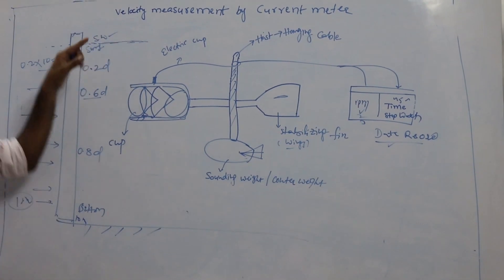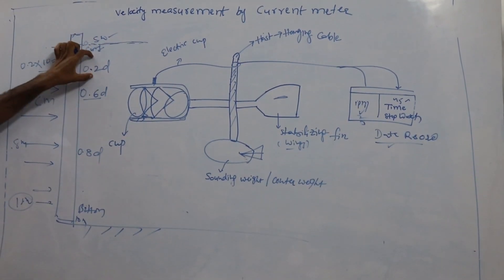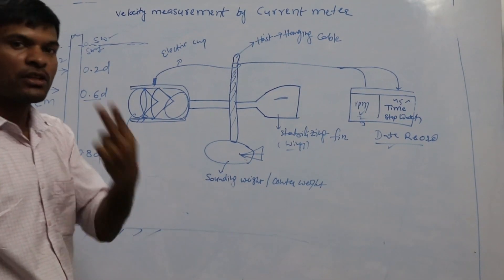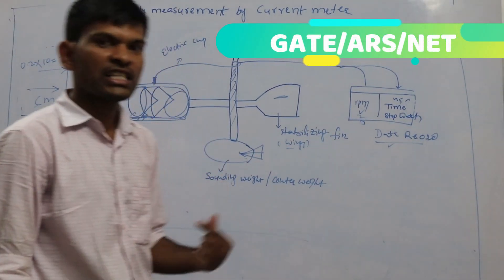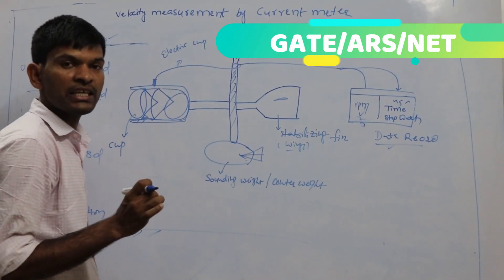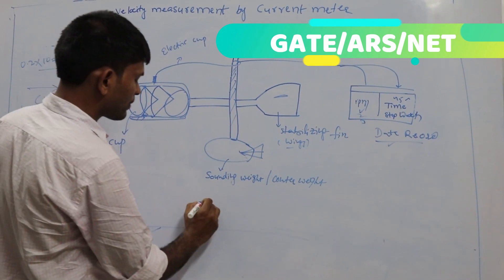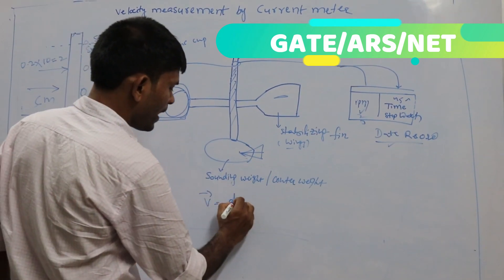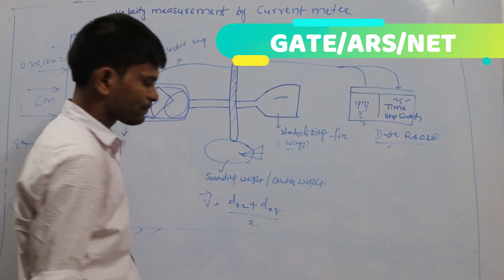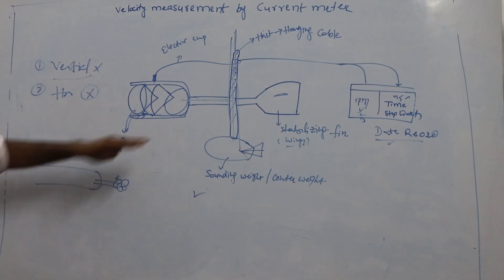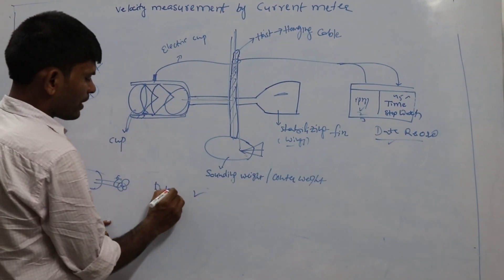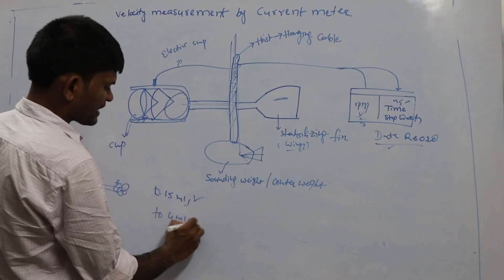This is the measurement of velocity with respect to position. For a shallow stream, we measure at only a single point. For a medium stream depth, velocity equals the average of velocity at 0.2 times depth and 0.8 times depth, divided by 2. Both types of current meter instruments normally measure velocities ranging from 0.15 meters per second to 4 meters per second.